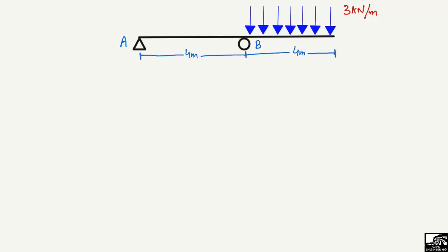Here we have a beam where a 3 kN per meter load is acting on the overhanging portion. The overhanging portion is 4 meters long, and the simply supported portion is also 4 meters. There is no load acting on the simply supported portion, and we have two support reactions, A and B.